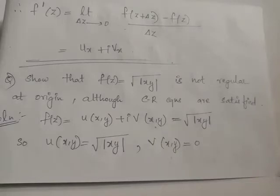f(z) = √|xy| is not regular at the origin although the CR equations are satisfied. The given function is purely real, so we have u(x,y) = √|xy| and v(x,y) = 0.